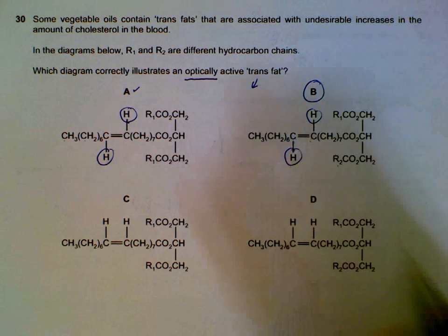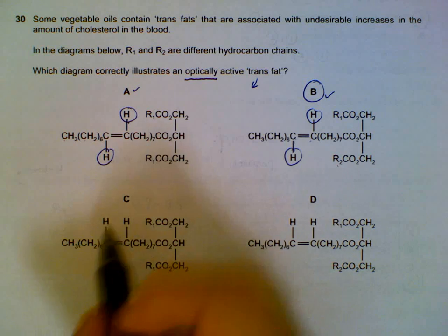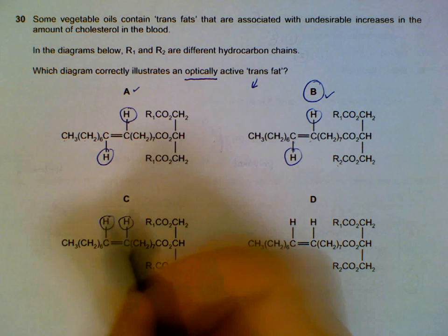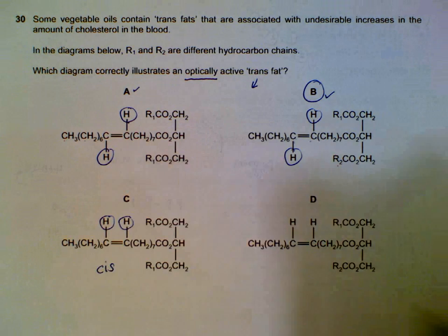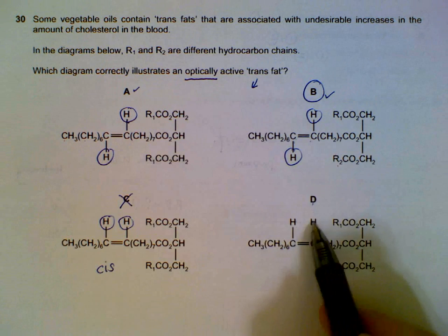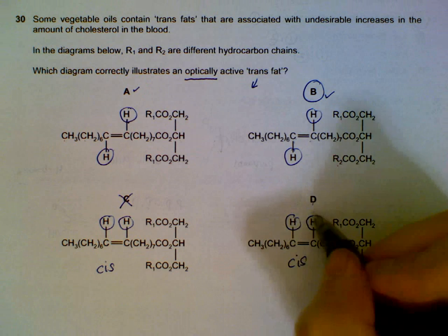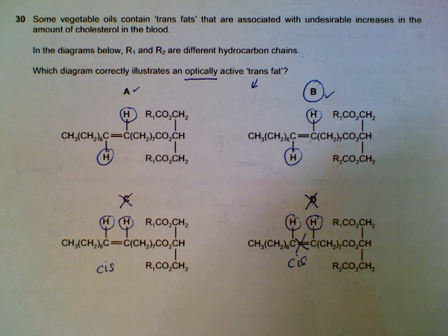C: double bond, the hydrogens are on the same side, so actually this is a cis, so it's out. D: same side hydrogen, so it is a cis version. D is also out.